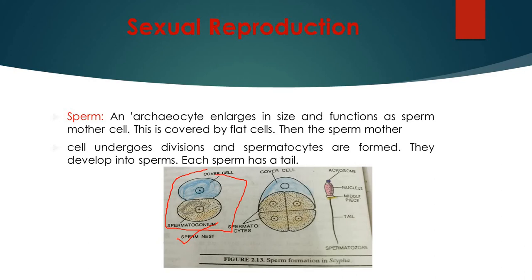So sperm nest or spermatocyst. It encloses spermatogonia that divide two or three times into spermatocytes. And then these spermatocytes undergo meiosis and give rise to sperm. So this is a structure of a typical sperm.